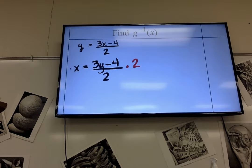Trying to solve for y. So I multiply both sides by 2, and you get 2x, twos canceled, equal 3y minus 4.